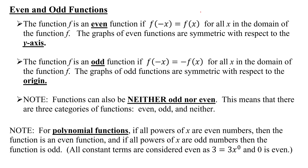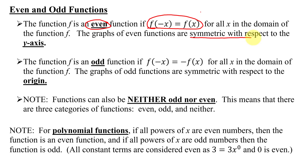This is my second video talking about even and odd functions. Quickly reviewing: the function f is an even function if f of negative x equals f of x for all x in the domain of the function f. The graphs of even functions are symmetric with respect to the y-axis.